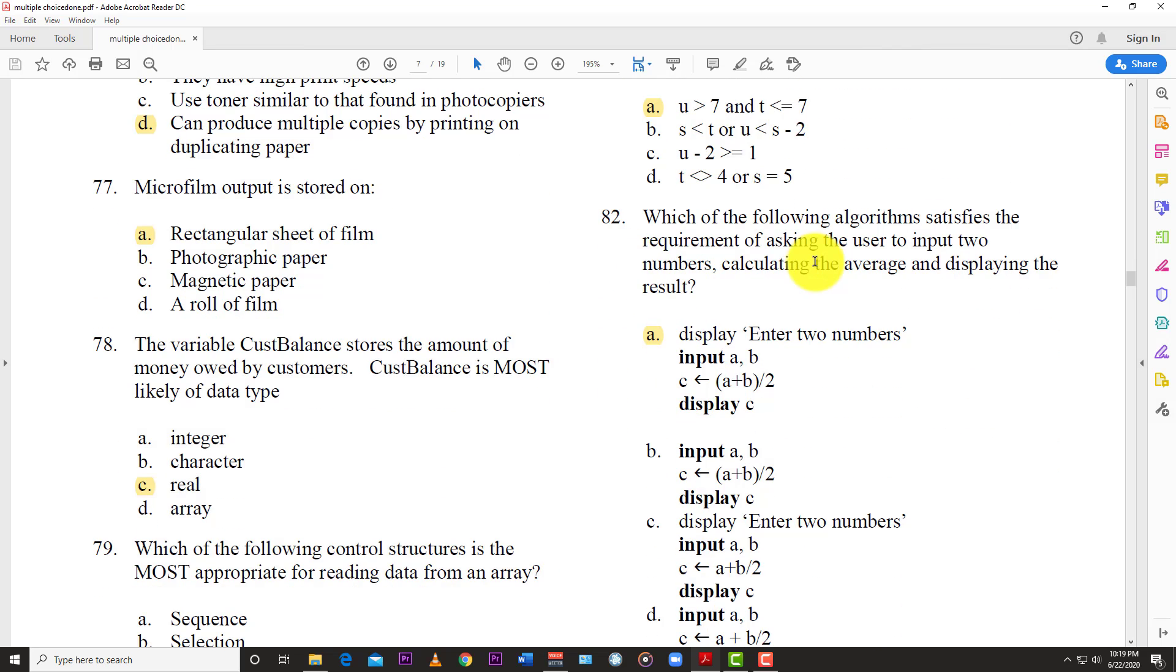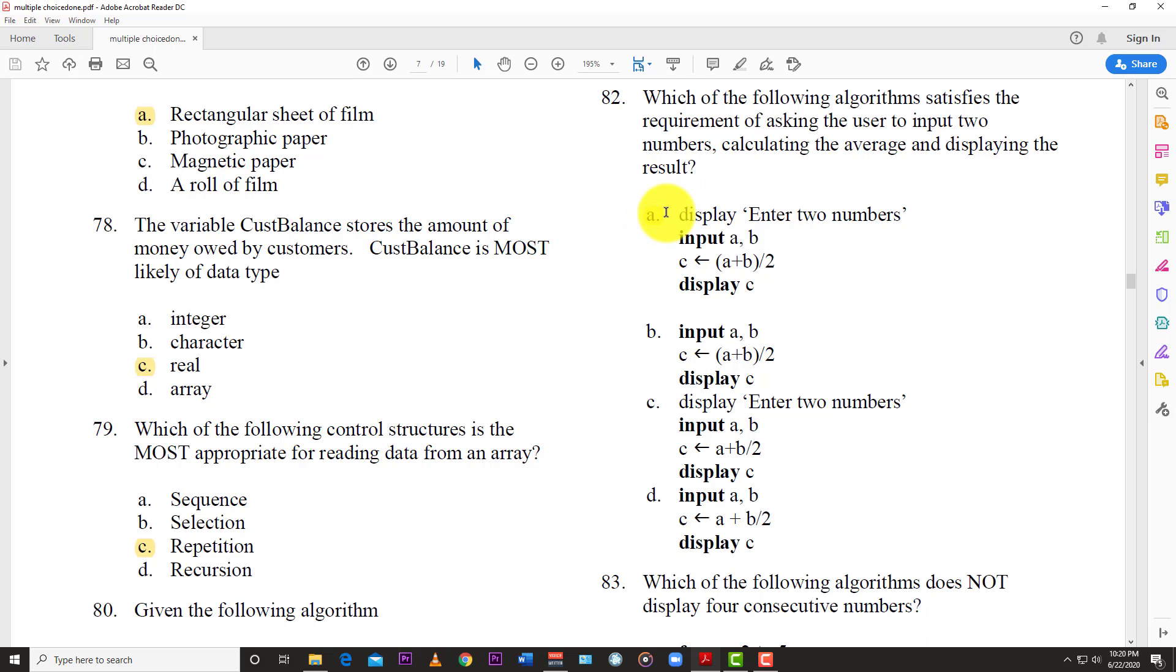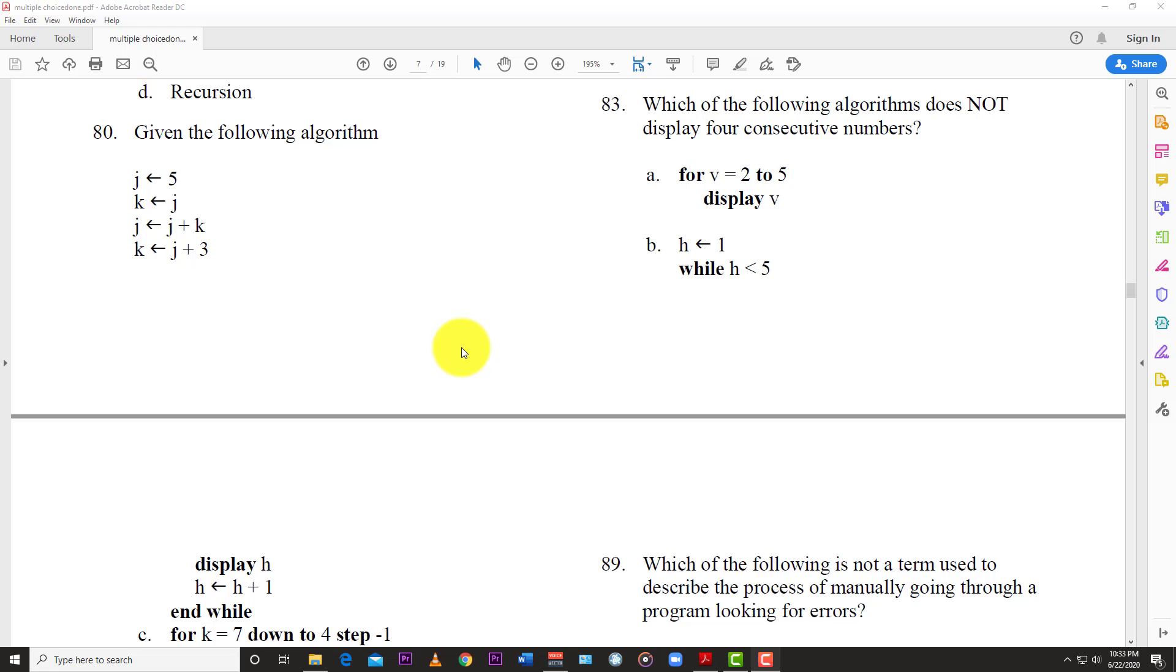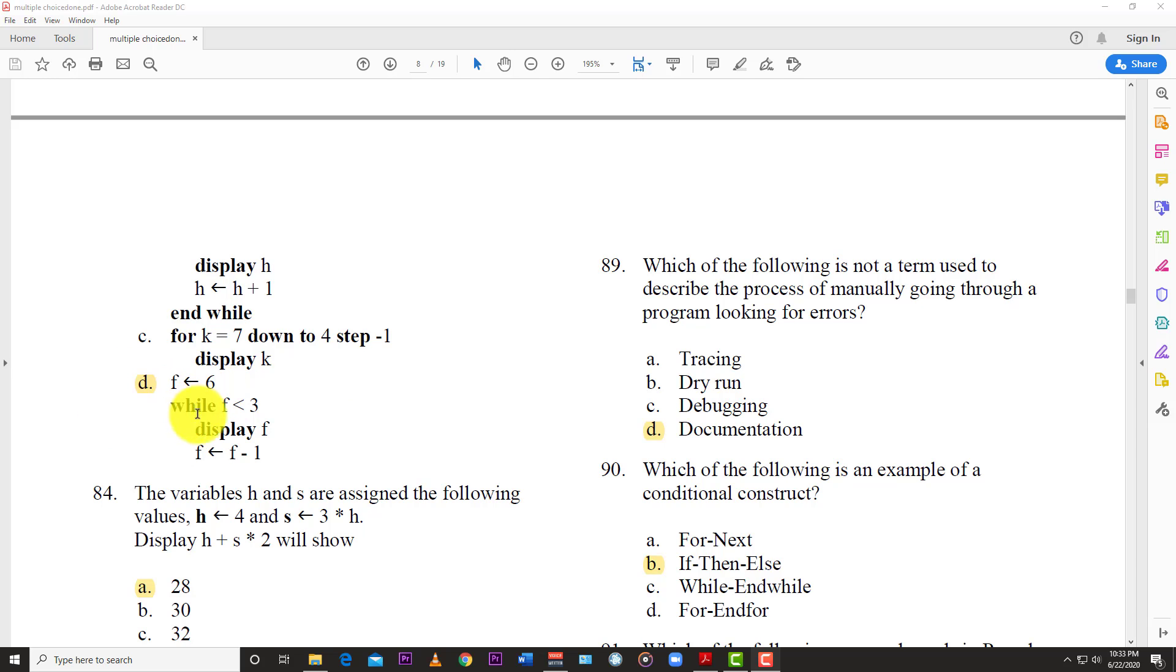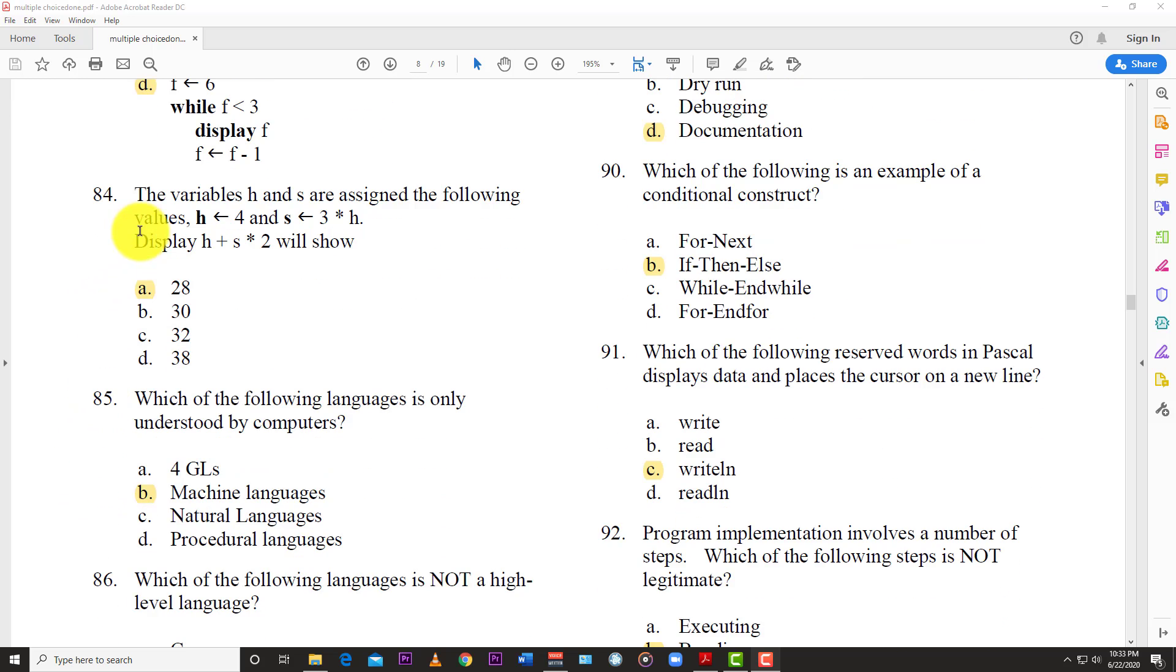Number 82: Which of the following algorithm satisfies the requirement of asking the user to input two numbers, calculating the average and displaying the result? And so the answer here is A: Display enter two numbers, Input A, B, then you have C equals A plus B divided by 2, Display C. So that's the algorithm right there. Question 83: Which of the following algorithms does not display four consecutive numbers? And so the answer here is D. Question 84: The variables H and S are assigned the following values. H 4 and S is 3 times H. Display H plus S times 2 will show. And so the answer here is A, 28.